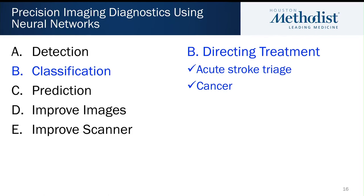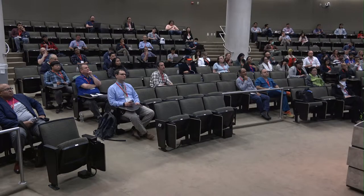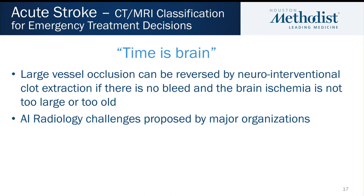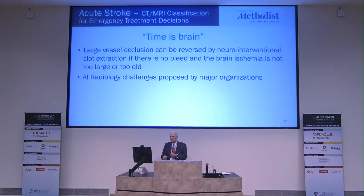Looking at classification, I'll take two examples — one acute and one chronic: stroke and cancer. In a stroke, there's an occlusion — a blood clot affecting flow to the brain — and time is brain: every second counts. We're trying to determine if a patient is a candidate to be taken to the neurointerventional suite, where a non-surgical method can extract the clot. We use imaging to ensure there's no hemorrhage, the occlusion isn't too large, and the ischemic area doesn't exclude the patient.